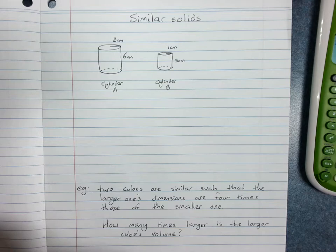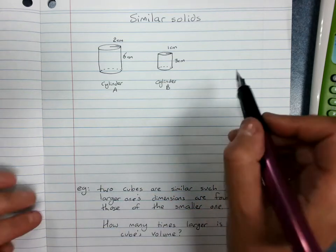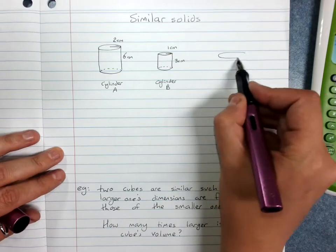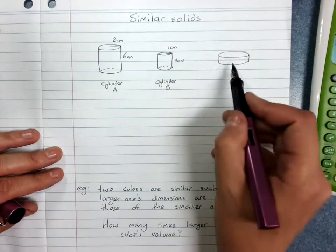So not all cylinders will be similar. You could imagine I could draw one that was really oddly shaped like that. It's definitely not the same shape as this.